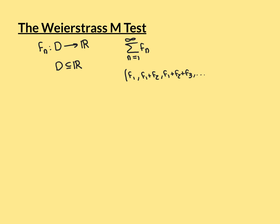A series of functions is just a sequence of functions in disguise. The sequence we're really interested in is the sequence of partial sums, which is itself a sequence of functions. The first term is just f1, the second is f1 plus f2, the third is f1 plus f2 plus f3, and so on. We're interested in whether this sequence of partial sums converges to a limit — and if it does, that's what we call the limit of the series of functions.